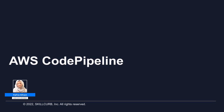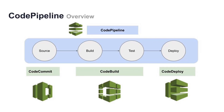Welcome to another hands-on session on Amazon Web Services. I'm Yafra Khan from Skill Curb and in this lab, we will have a walkthrough of CodePipeline in AWS. AWS CodePipeline is a continuous delivery service to model, visualize and automate the steps required to release your software.